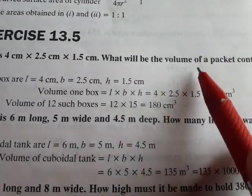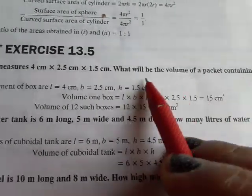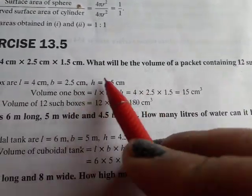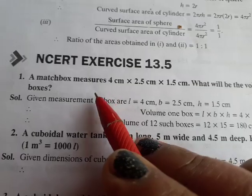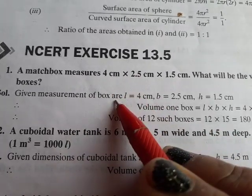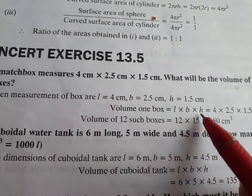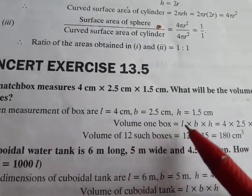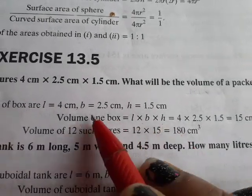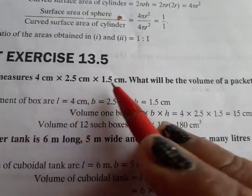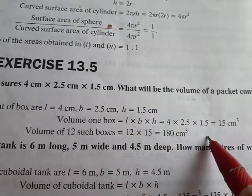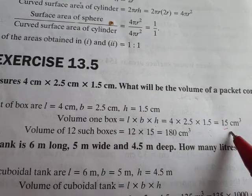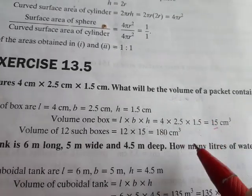What will be the volume of a packet containing 12 such boxes? So what will be the volume of 12 boxes? First, we find one box. The cuboid's formula is length into breadth into height. We have given the dimensions, so volume of one box is length into breadth into height: length is 4 cm, breadth is 2.5 cm, and height is 1.5 cm. So we got 15 cm³.